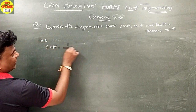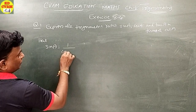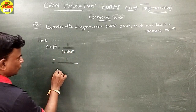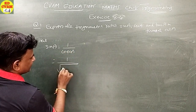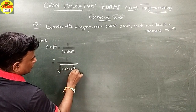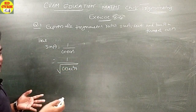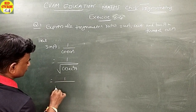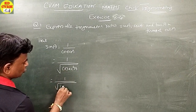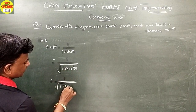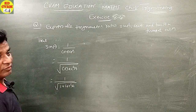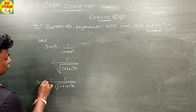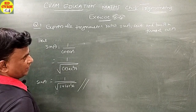Sine A is equal to one upon cosec A. We can write it under a square root. Cosec squared A is equal to one plus cot squared A. Therefore, sine A is equal to one divided by square root of one plus cot squared A.